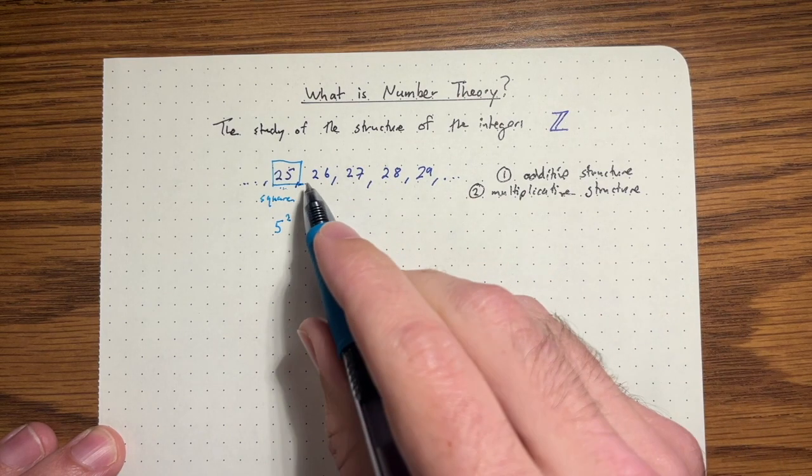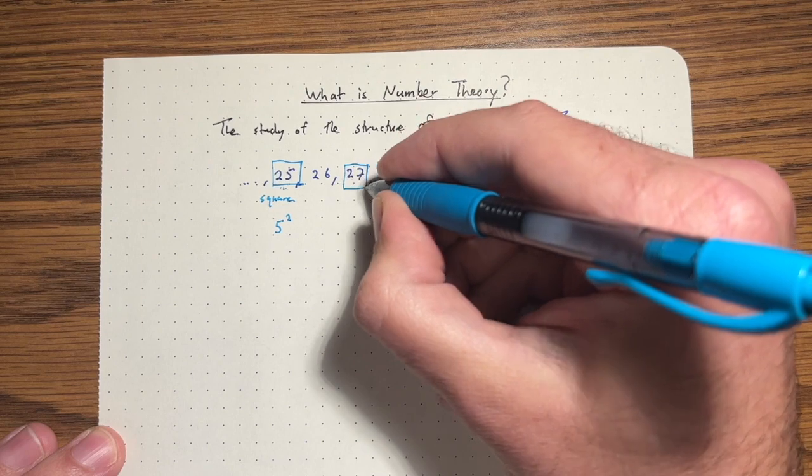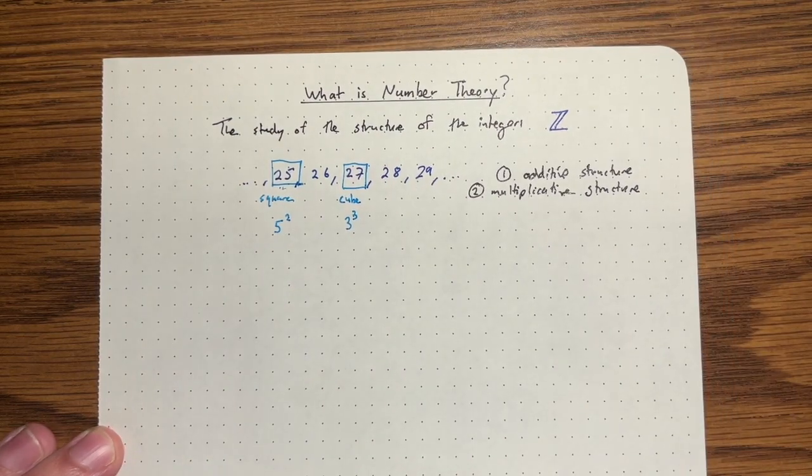There aren't any other square numbers here. But 27 is actually rather interesting, too. It's a cube. It's 3 cubed, 3 times 3 times 3.